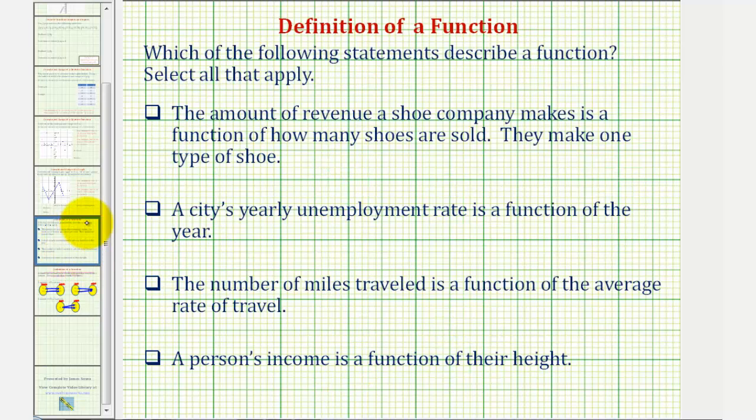Going back to our four statements, the first statement says the amount of revenue a shoe company makes is a function of how many shoes are sold. They make one type of shoe.